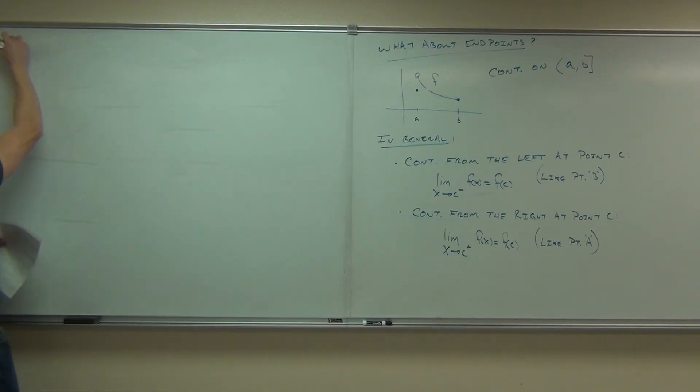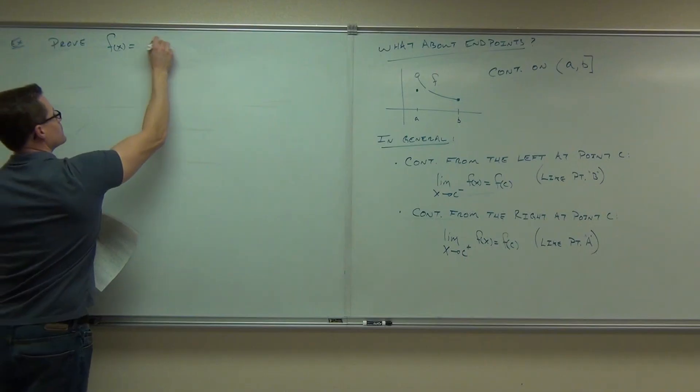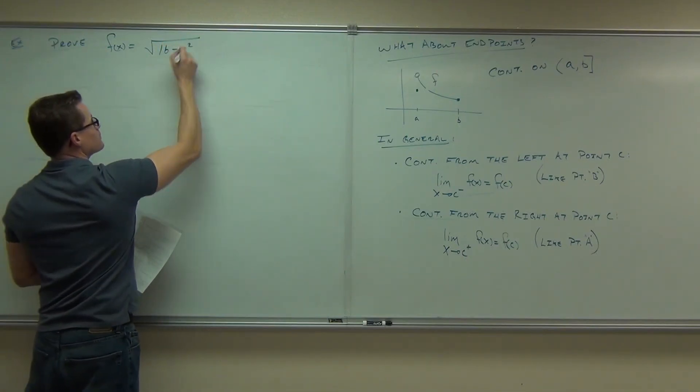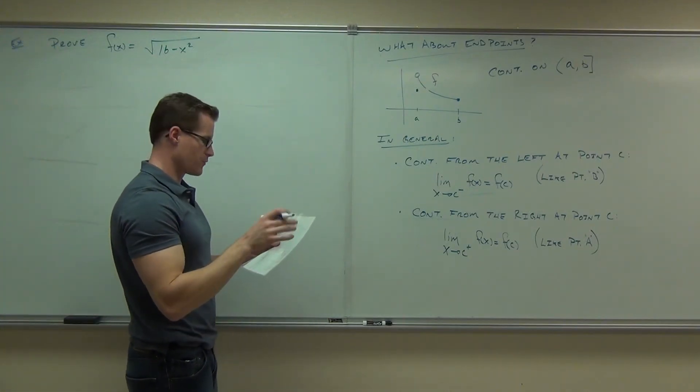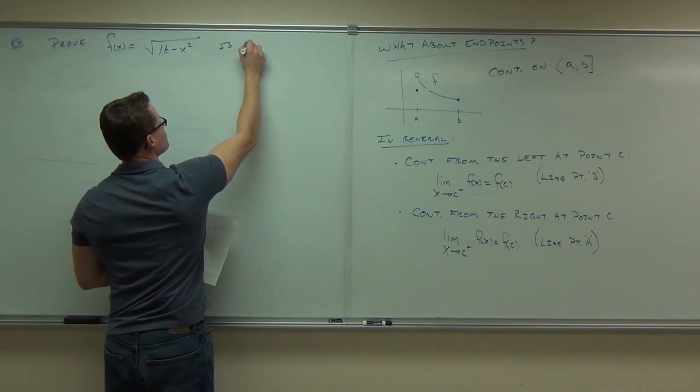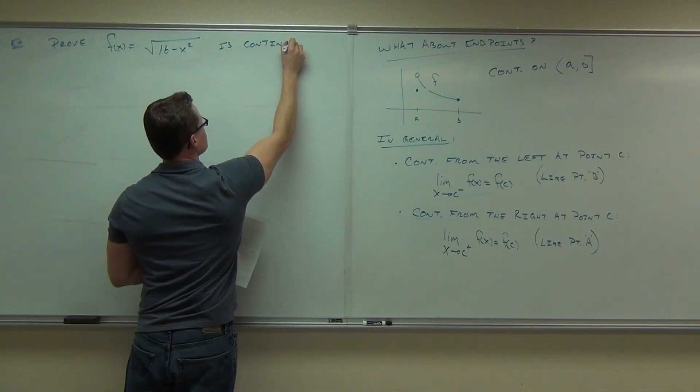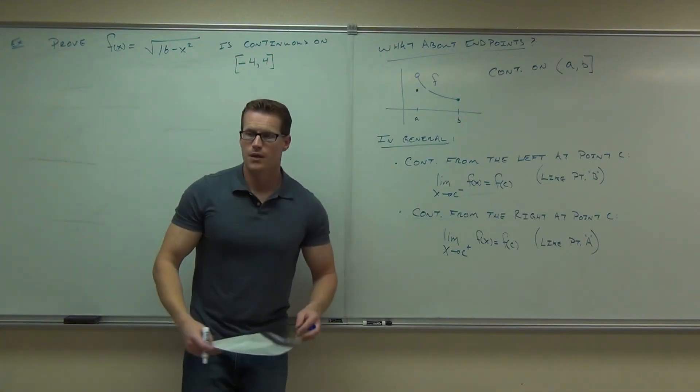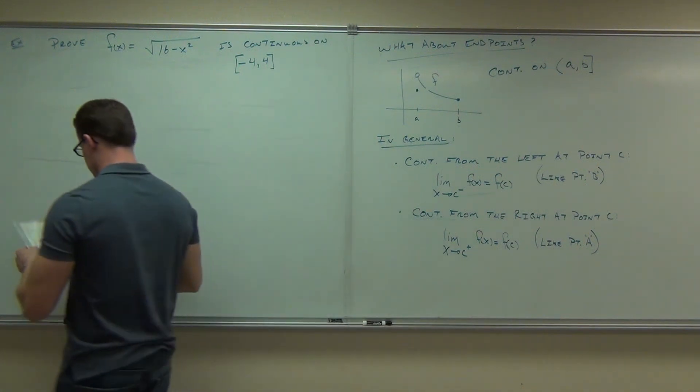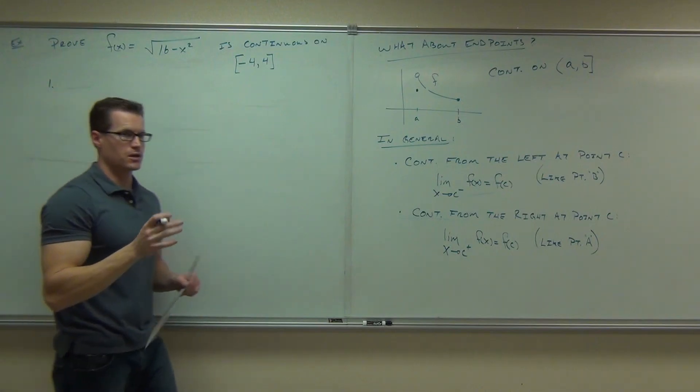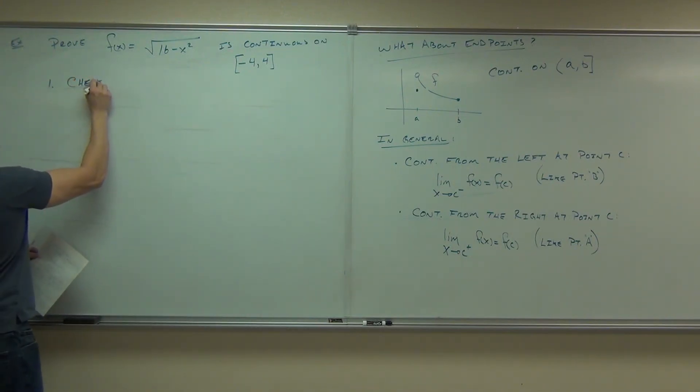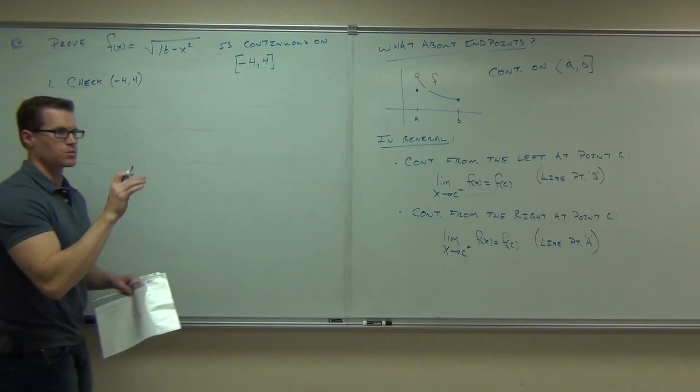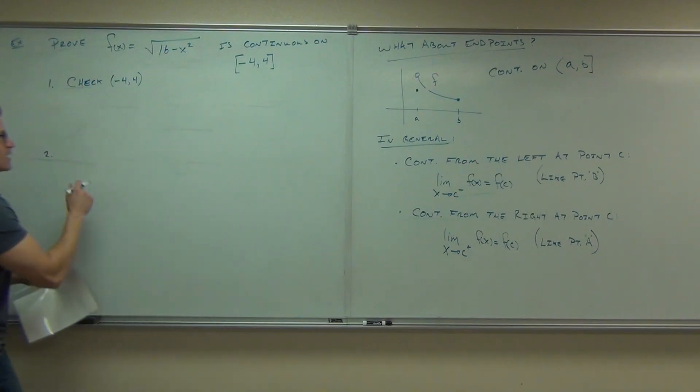So, I want to prove that this function is continuous on negative four to four. Inclusive, closed interval. This, again, involves three parts. The first step, we've got to check the open interval. Got to check the open interval. The next step is going to be check the right endpoint. The next step is going to be check the left endpoint. So, I'll write these out, and we'll start here next time.